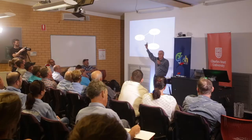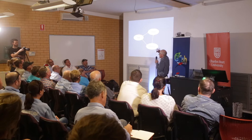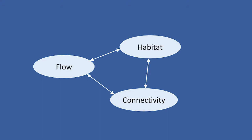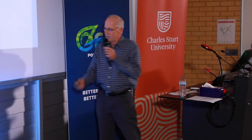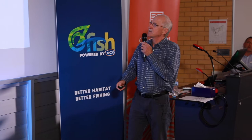We often talk about environmental flow and we think that will solve it. We talk about habitat and that will solve it - we'll get more native fish back. And we talk about fishways and connectivity - that will solve it. But you need all three. If you get one message out of my talk, don't forget that. You need all three.